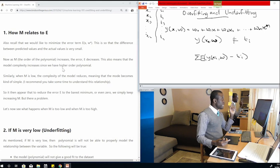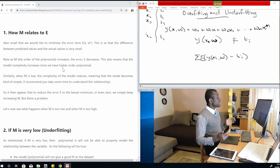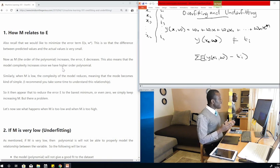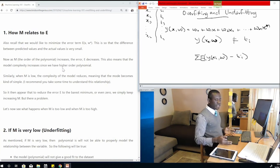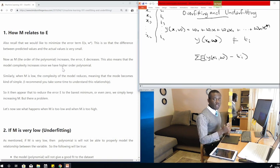How is M related to E? Also recall that we would like to minimize the error E(x,w), which is the difference between the predicted value and the actual value. Now when M increases, the error decreases, meaning that the more you increase the order of the polynomial, the more you are getting close to what the dataset actually is.